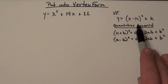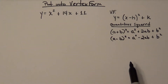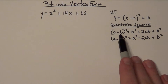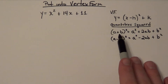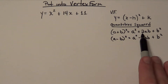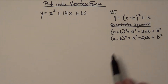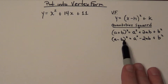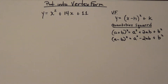When we look inside the vertex function, we have a quantity squared. So let's take a look at what a quantity squared looks like. If I have the quantity a plus b squared, that form when I do the distributive property is going to create a squared plus 2 times a times b plus b squared. The only difference with a minus b quantity squared is that the middle term becomes negative 2ab, but everything else is the same.